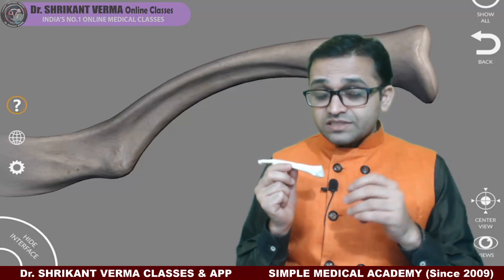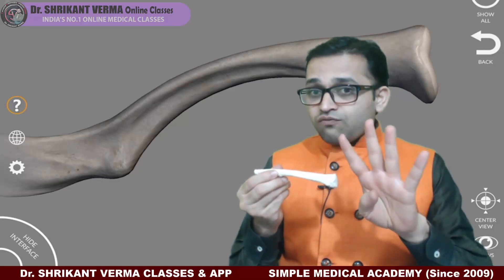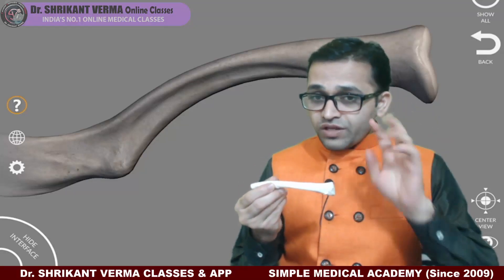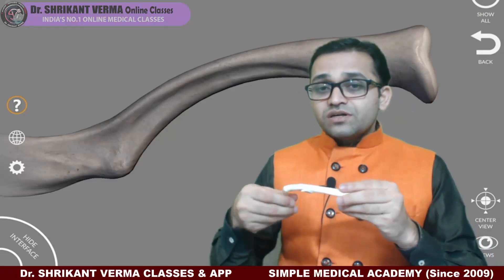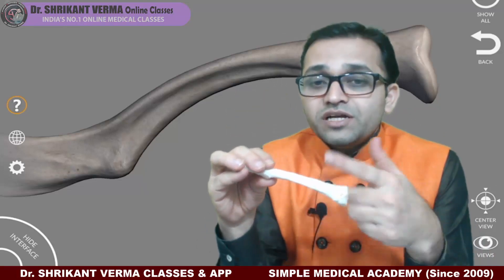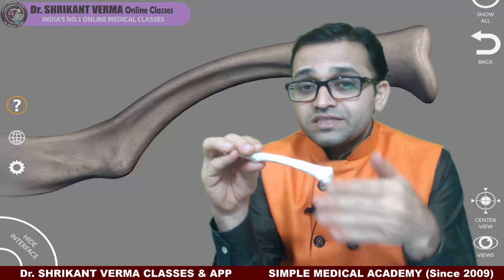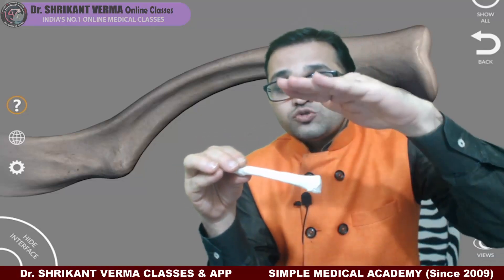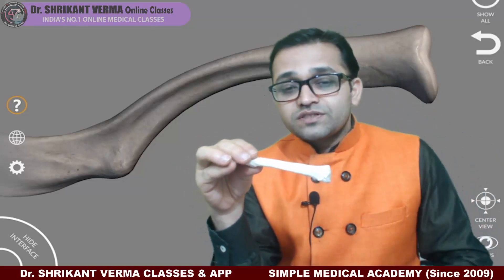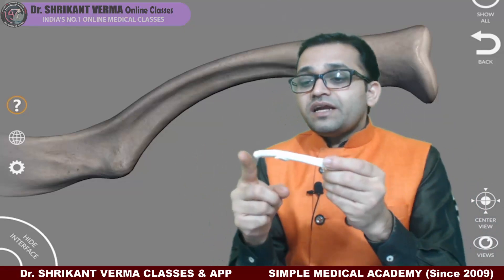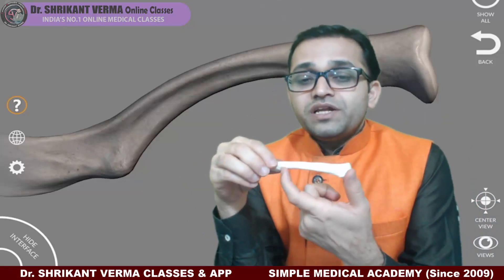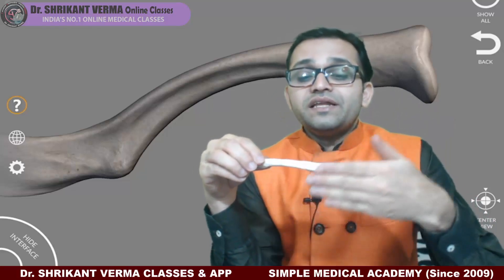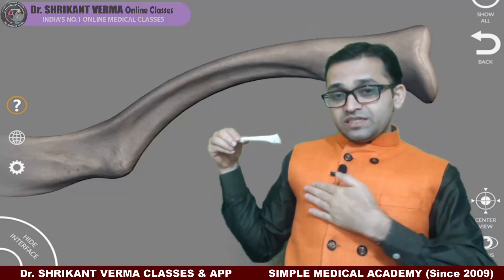In detail, the medial two-thirds has four surfaces: anterior, posterior, superior, and inferior. There is a magic of four — four surfaces and four important facts for the medial two-thirds, and four important facts for the lateral one-third as well. The medial part is quadrangular in cross-section.